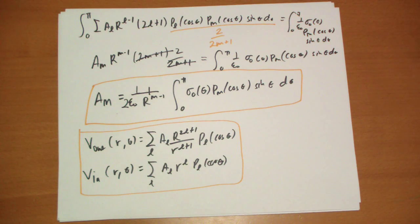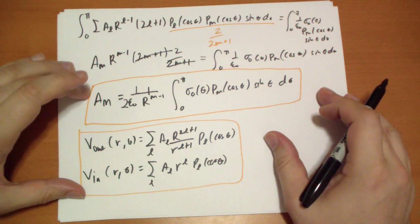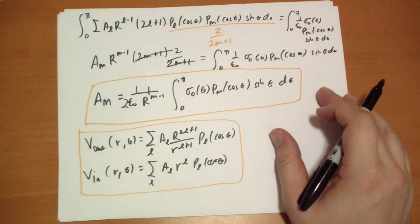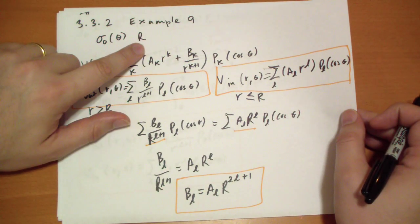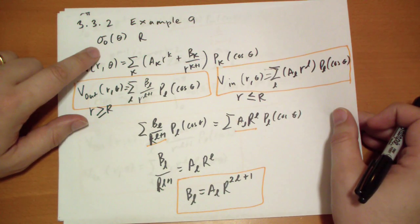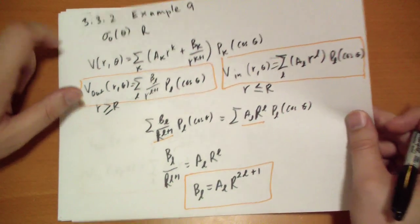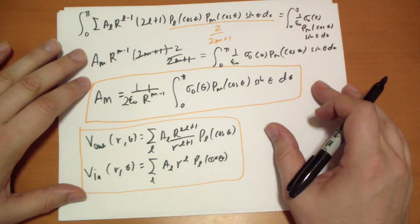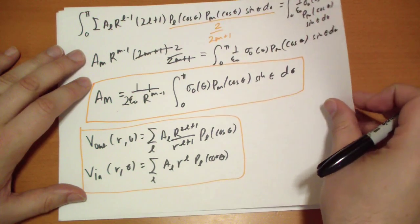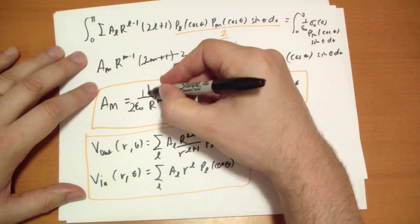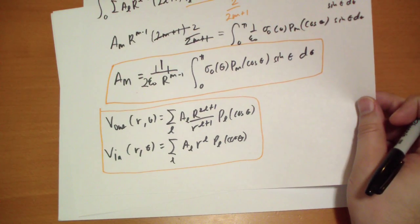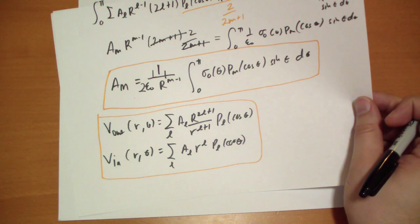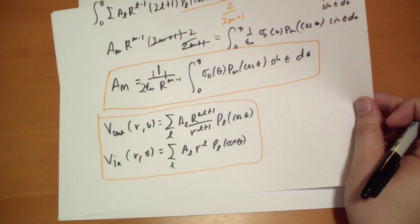Let's continue. So we came up with this equation for the problem that was described in example 9 where we had a sphere of radius R centered on the origin of surface charge density sigma-naught of theta. And this is the equation that we came up with. Now we're going to do an example here where he suggests we take a look at what happens if our sigma-naught of theta is equal to this.